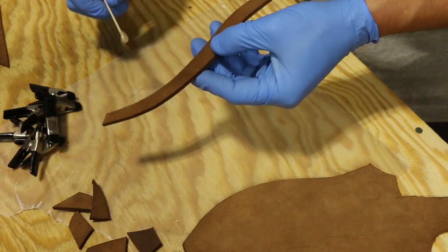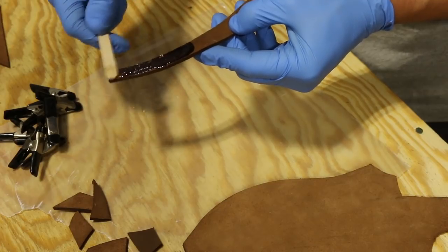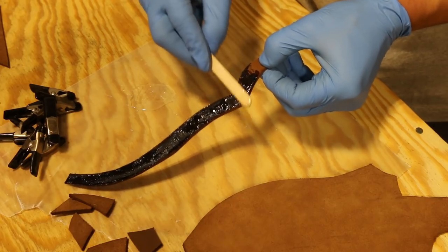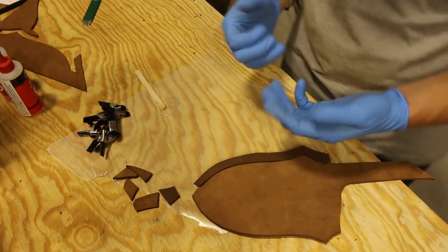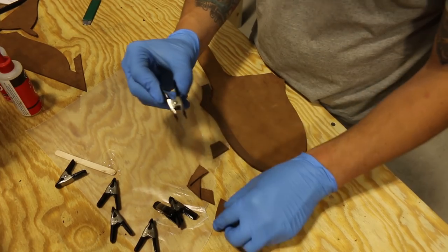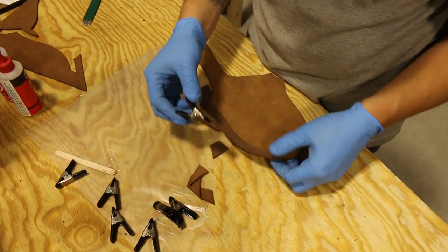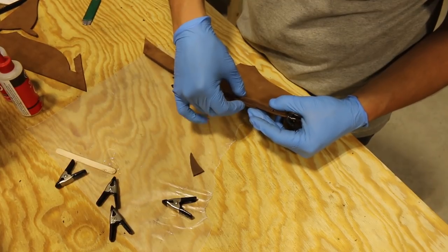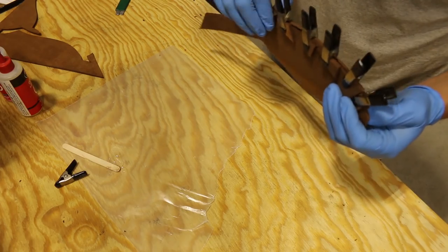Using either contact cement or epoxy, I now attach the welt to one side of the sheath. I'm using some small scraps of leather to act as pads underneath the clamps. This will keep the clamps from leaving impressions in the leather. I like to make sure that the welt hangs a little bit proud from the rest of the material.